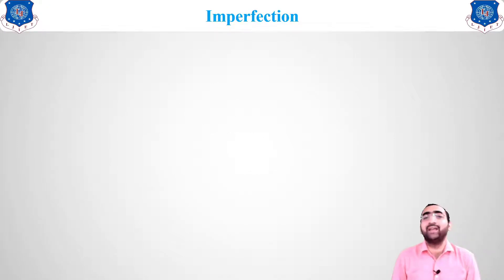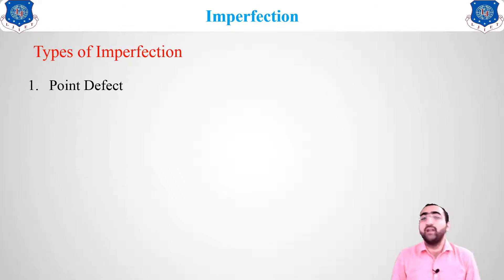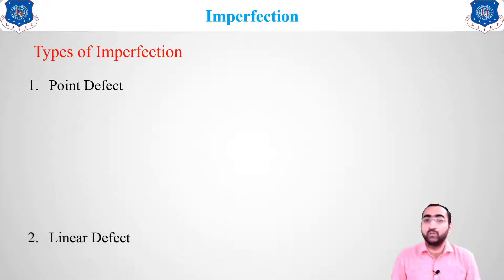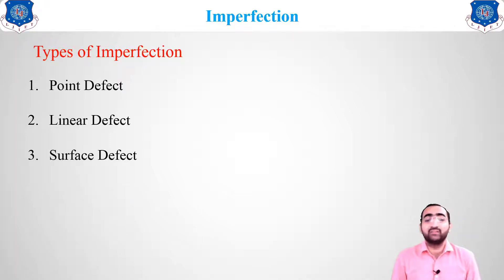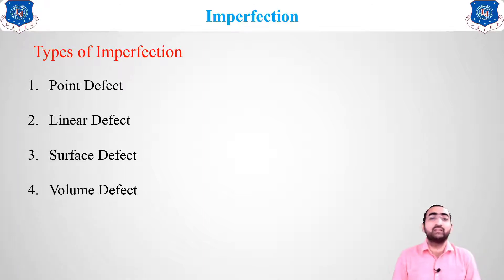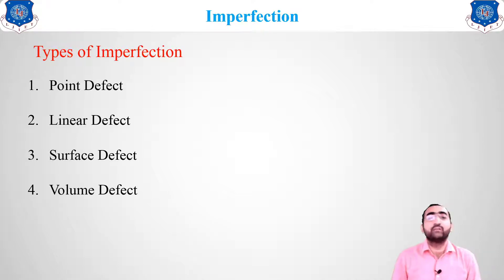How many types of defects are there? Types of imperfection include: point defect, which is caused by a single atom; linear defect, where a whole line of atoms creates the defect; surface defect, where the whole surface has a problem; and volume defect. In today's lecture we will discuss all these types of defects occurring inside the material.